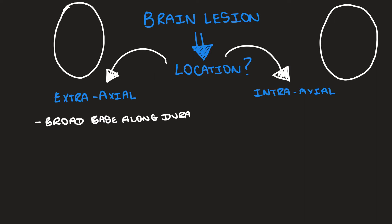In contrast to an intra-axial lesion, an extra-axial lesion will usually have a broad base along the dura. It can also have a dural tail. Adjacent to the lesion, you may also see some bone hyperostosis. This basically means that the adjacent bone will be expanded, so if the lesion is here, the bone adjacent to it will appear expanded.